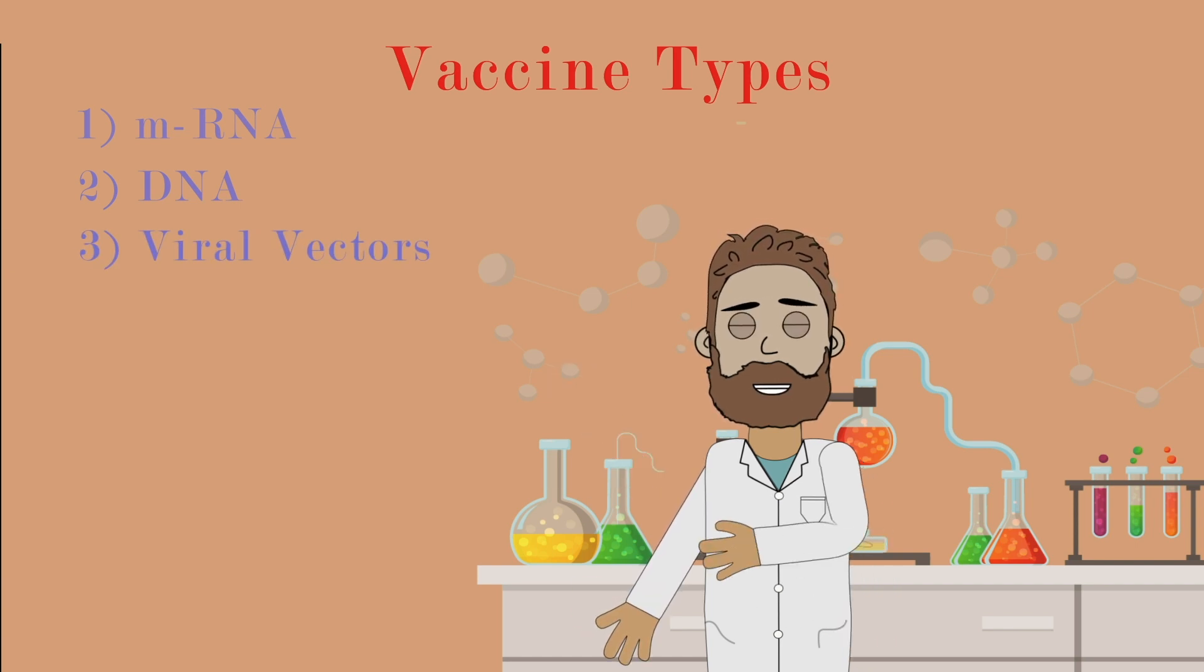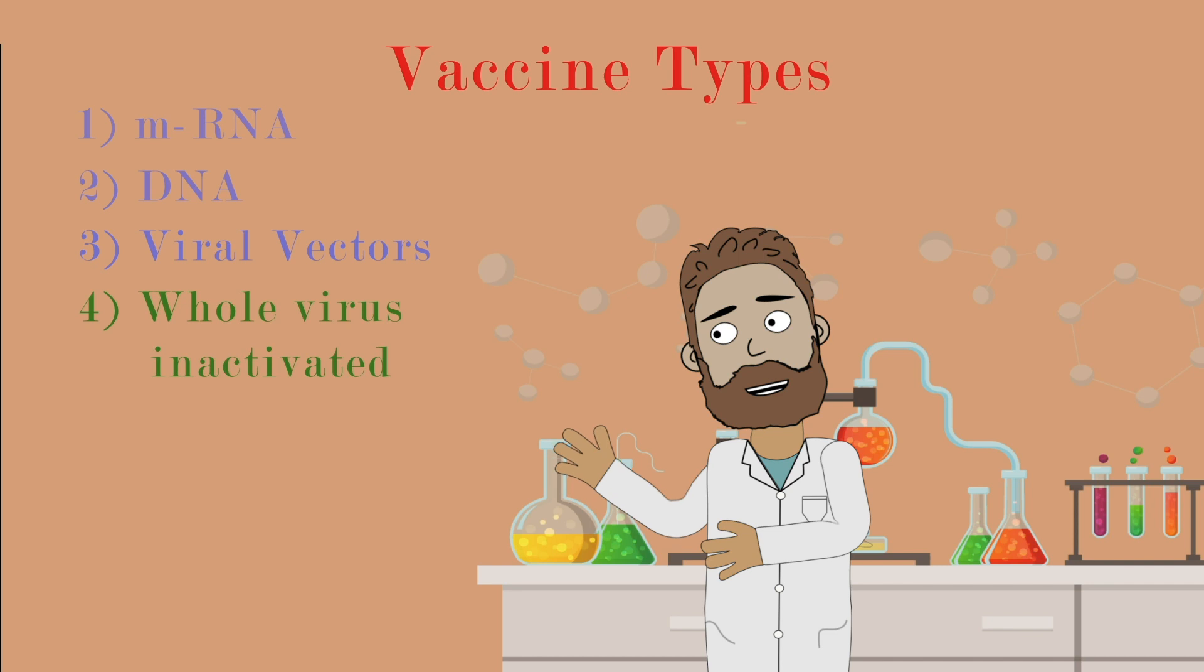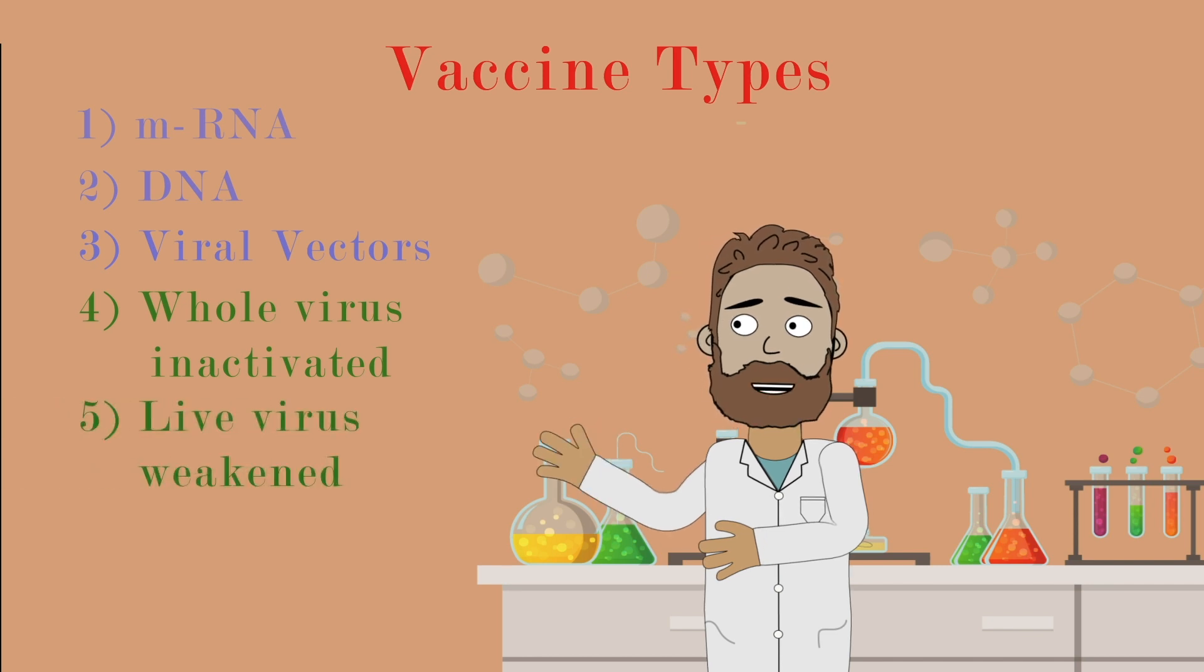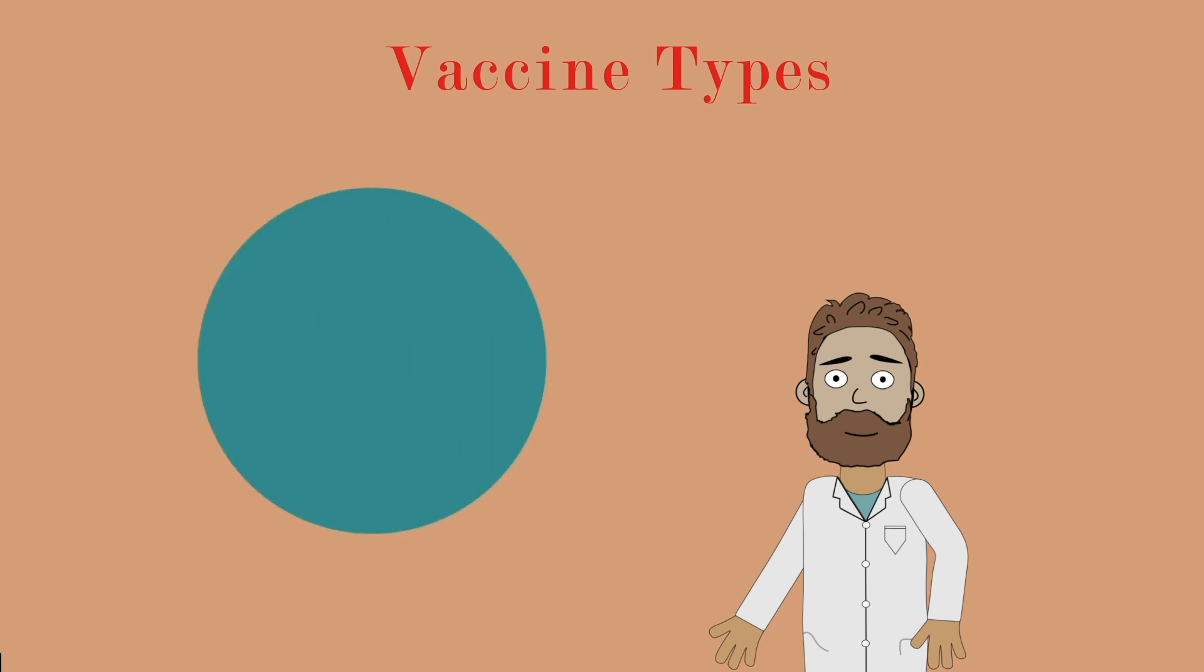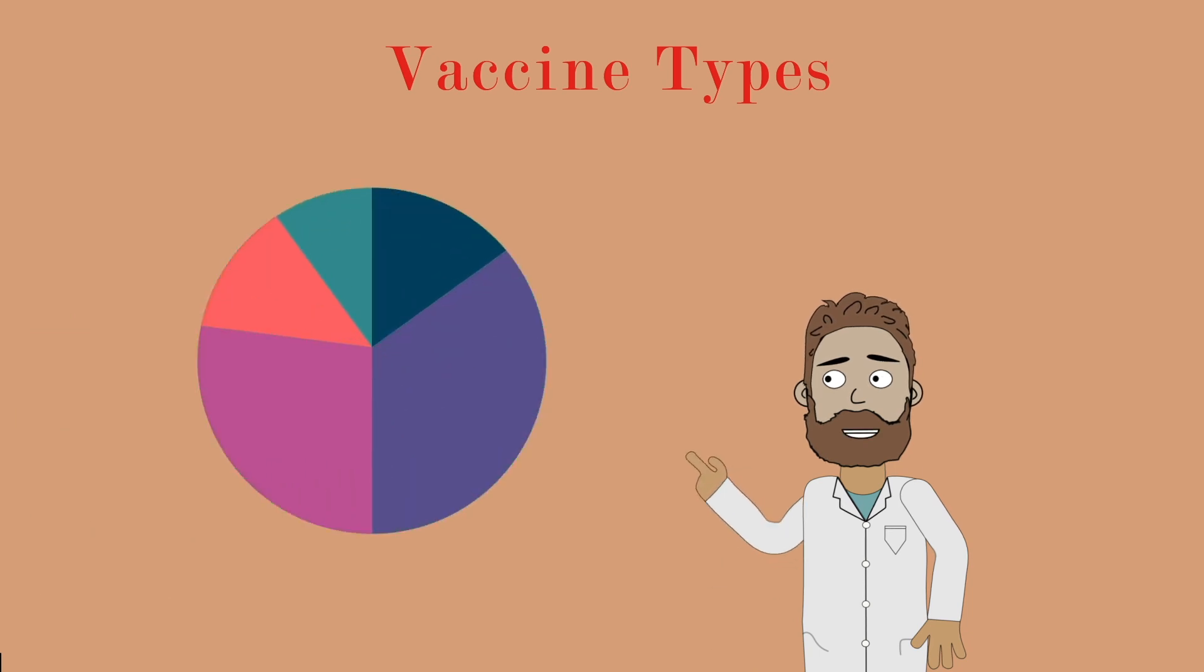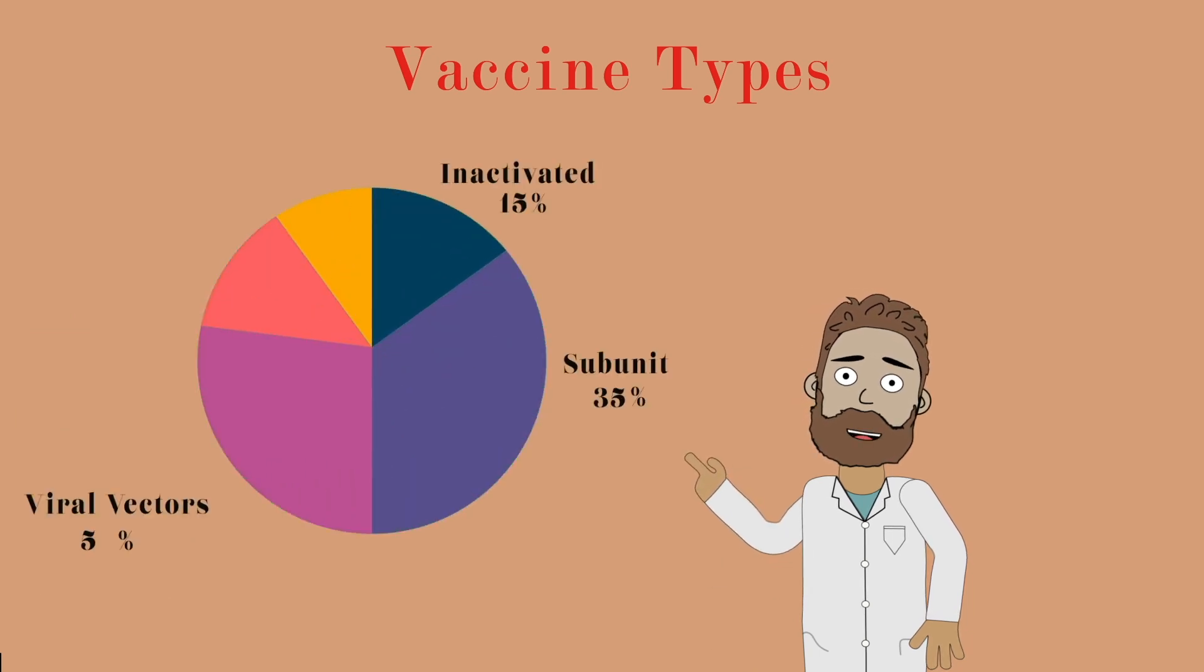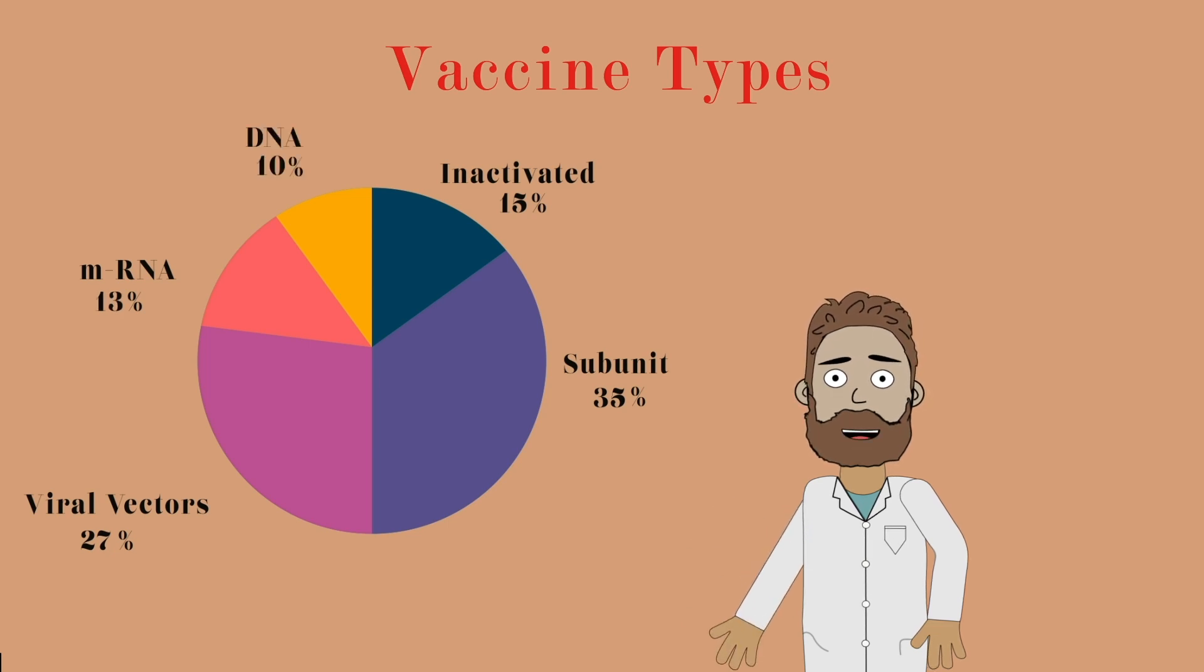The most classic approaches include the use of whole virus inactivated or killed, live virus weakened, and subunit vaccines. Here we can see a pie chart showing the different categories of SARS-CoV-2 vaccines under clinical and pre-clinical development. As we can see, the vaccines under development are equally divided between the two approaches.